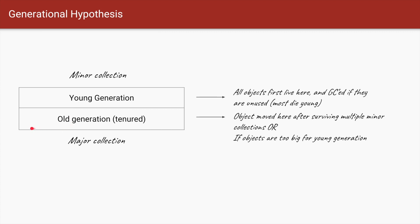If objects like class-level or instance-level variables have much longer lifetimes, after many minor collections where they are still not eligible for garbage collection, they are promoted into the old generation. When the space occupied in the old generation goes beyond a threshold — say 60–70% — a major collection is triggered, and a different algorithm is run on the old generation.